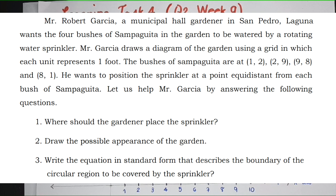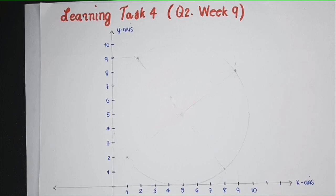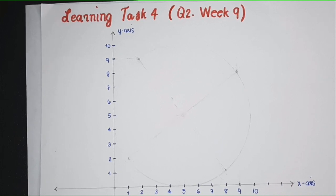The bushes of Sampaguita are at (1,2), (2,9), (9,8), and (8,1). He wants to position the sprinkler at a point equidistant from each bush of Sampaguita. Let us help Mr. Garcia by answering the following questions. To start with this problem, let's locate all the four points where the bushes of Sampaguita will be placed.